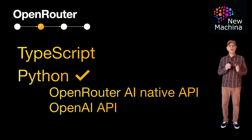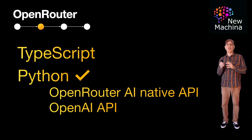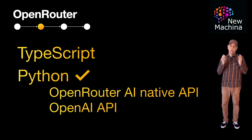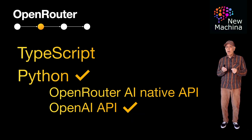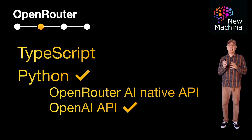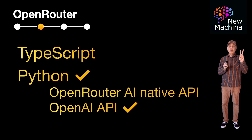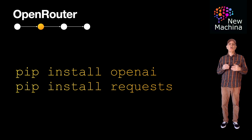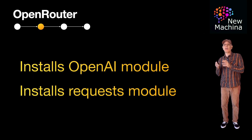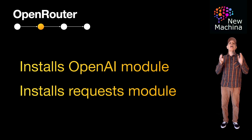OpenRouter allows you to integrate with its service programmatically using the same API OpenAI uses when you integrate with their services. OpenRouter added support for the OpenAI API since it was very popular within the community. In this video, we're going to use the OpenAI API option even though the LLMs we're integrating with are from Anthropic and DeepSeek AI. We're almost ready to look at some Python code, but first you'll need to download two Python dependencies. In your terminal window, execute pip install on the OpenAI and the requests modules.